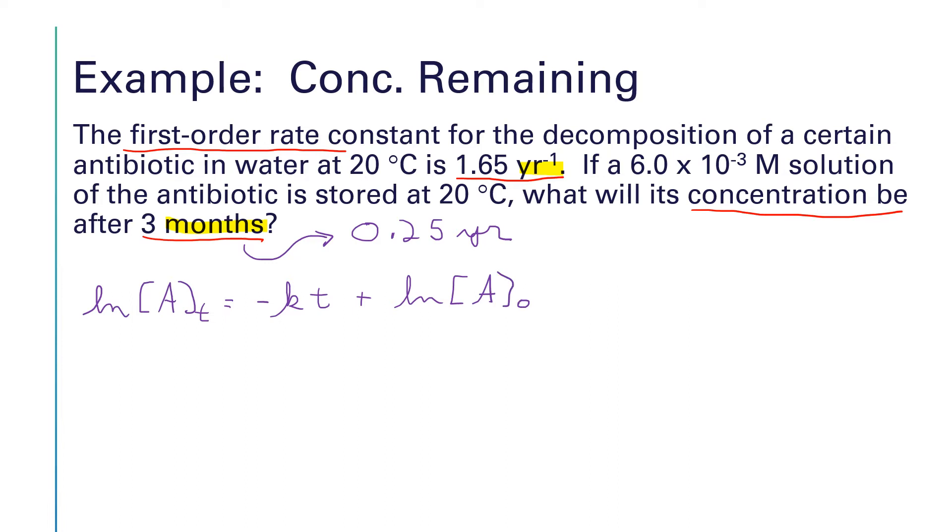We are looking for the concentration at time t, where t is a quarter of a year, right? So that quarter of a year is equal to t. Our initial concentration is the 6.0 times 10 to the minus 3 molar. That's how much we're starting with at time zero. That's our concentration. So let's plug some numbers in here and see what we can come up with.